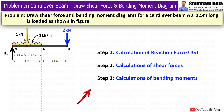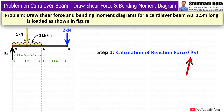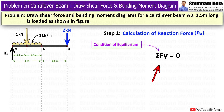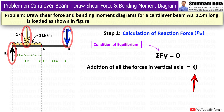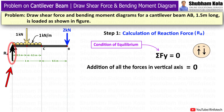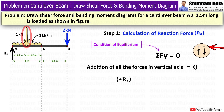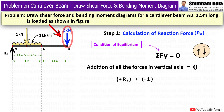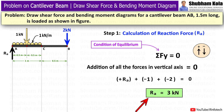This problem will be solved in three steps. In the first step, we calculate the value of support reaction force Ra. To do this, I will use the condition of equilibrium: summation of Fy equals 0, meaning the sum of all vertical forces equals 0. Upward forces are considered positive and downward forces negative. Ra is the vertical reaction force, so it is added with a plus sign. The converted point load of 1kN acts downward, so it is added with a negative sign. The point load of 2kN also acts downward, so it is added with a negative sign. From this, Ra equals 3kN.